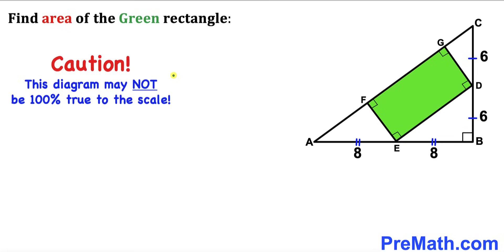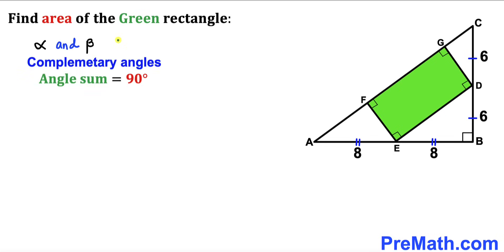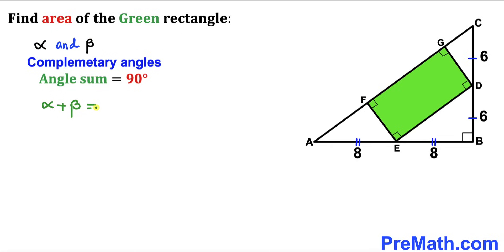Please keep in mind that this figure may not be 100% true to scale. Let's go ahead and get started. Here's our very first step: let's assume that alpha and beta are our two complementary angles. In other words, the sum of angles alpha and beta must be equal to 90 degrees.